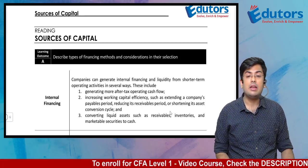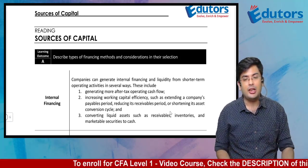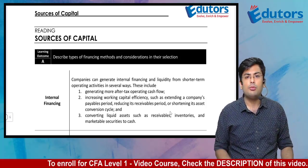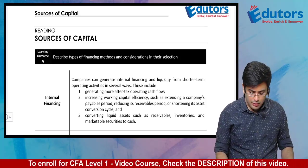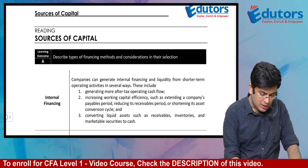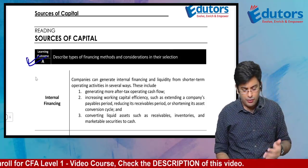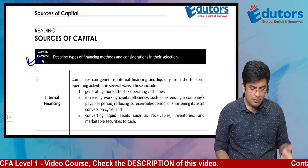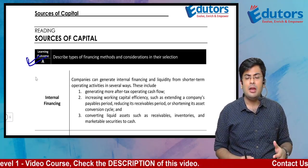In the first part, we are going to cover Learning Outcome A, which we will cover partially because it is a very big learning outcome — so we want to split it into two parts. We are going to start off with Learning Outcome A, which describes the types of financing models and considerations in their selection. Basically, we will know how to finance our business.